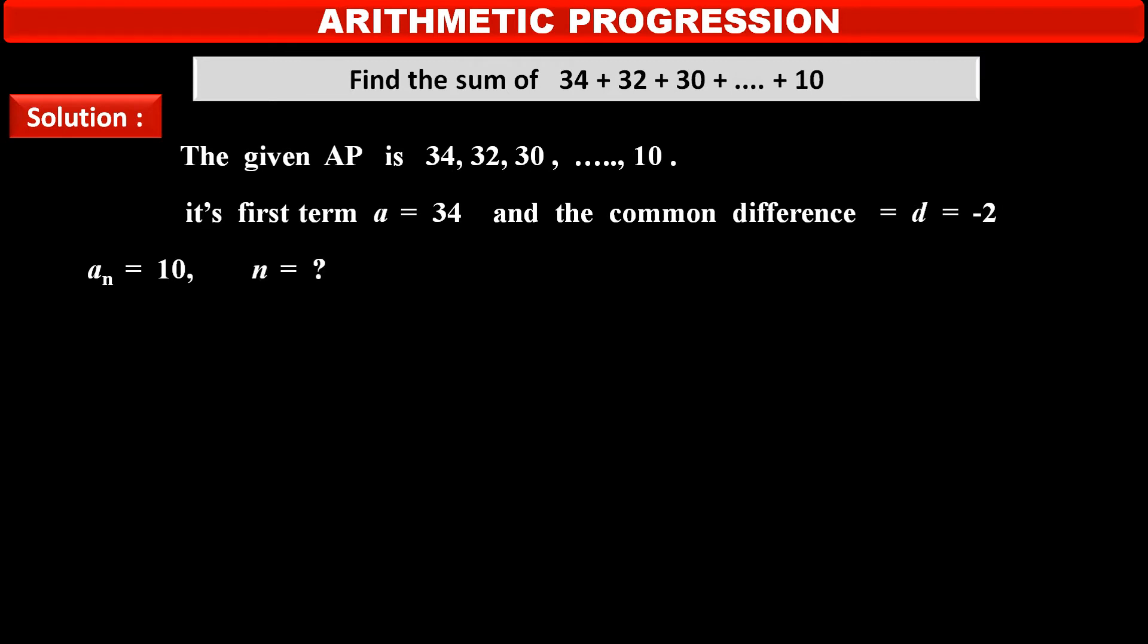So, to find the sum of all these terms, means sum of the given series, first we have to find n by using formula of nth term. We know the formula a_n is equal to first term a plus in bracket n minus 1 into common difference d.